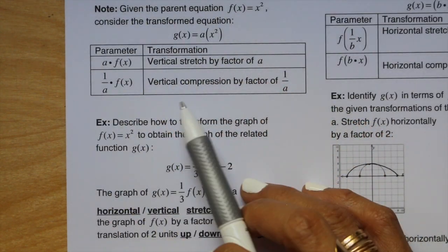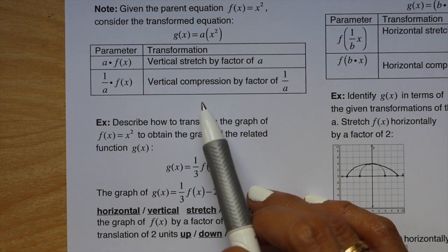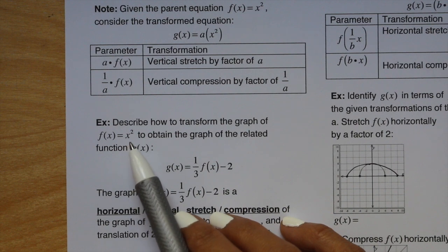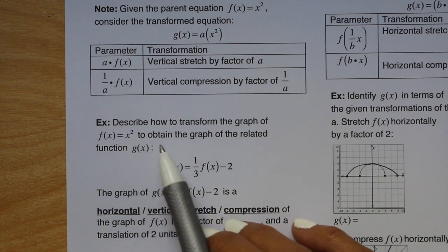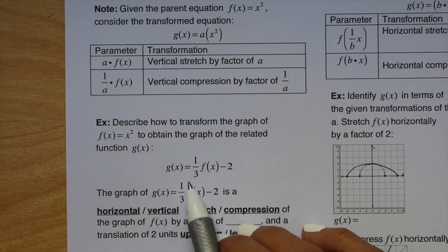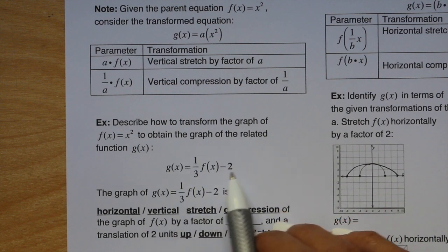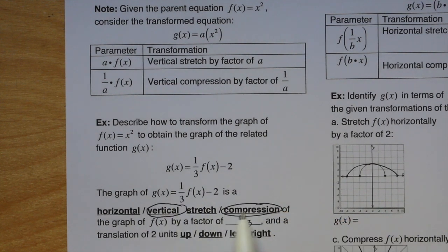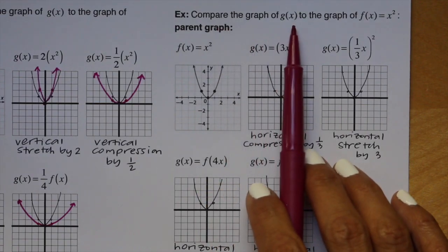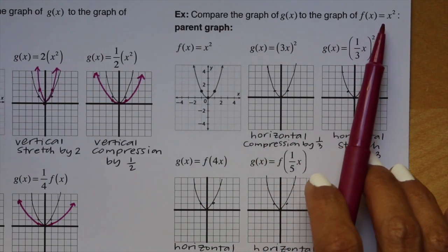This sums up vertical stretches and compressions. This example says: describe how to transform the graph of f of x equals x squared to obtain the graph of g of x. We have g of x equals 1 third f of x minus 2 — a vertical compression by a factor of 1 third, and because the number at the end is negative, a translation of 2 units down.